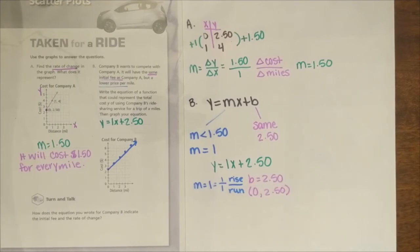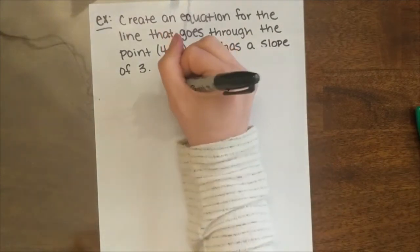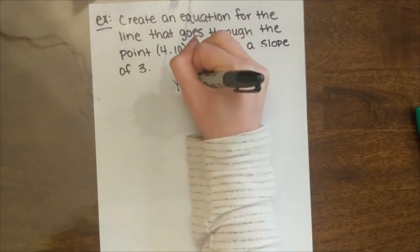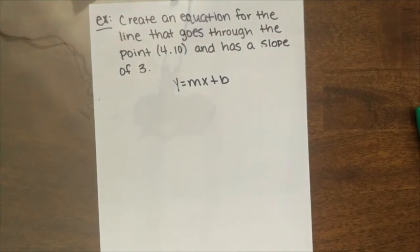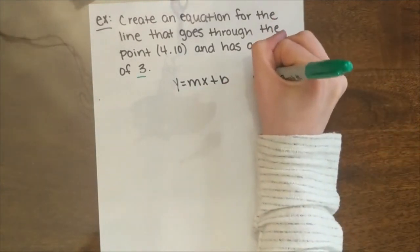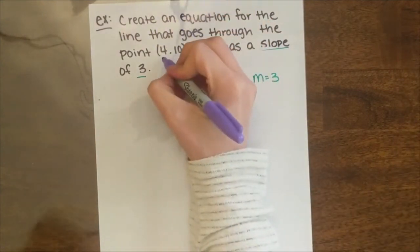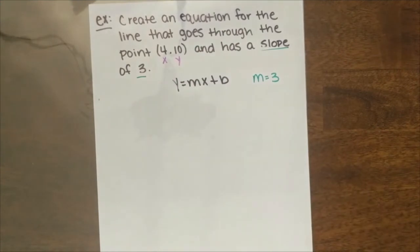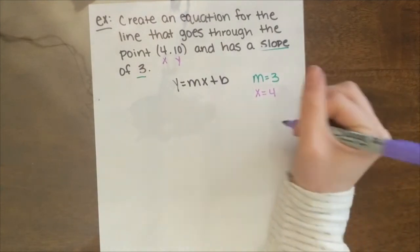For our next example, we're going to work the following problem. It says create an equation for the line that goes through the point 4, 10, and has a slope of 3. To get started, we're going to recognize we're going to use slope-intercept form to make our equation. Remember that slope-intercept form is y equals mx plus b. Our equation tells us that our slope is 3, so m equals 3, and our ordered pair we're using is 4, 10. We reviewed earlier that ordered pairs are made up of input and output values. So we have an x value of 4 and a y value of 10.